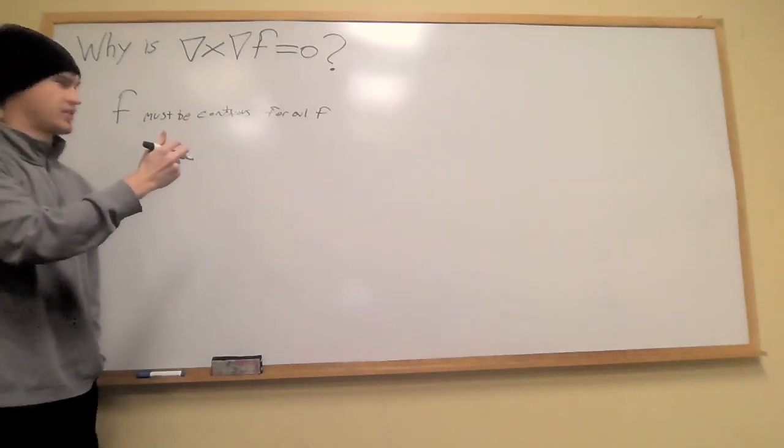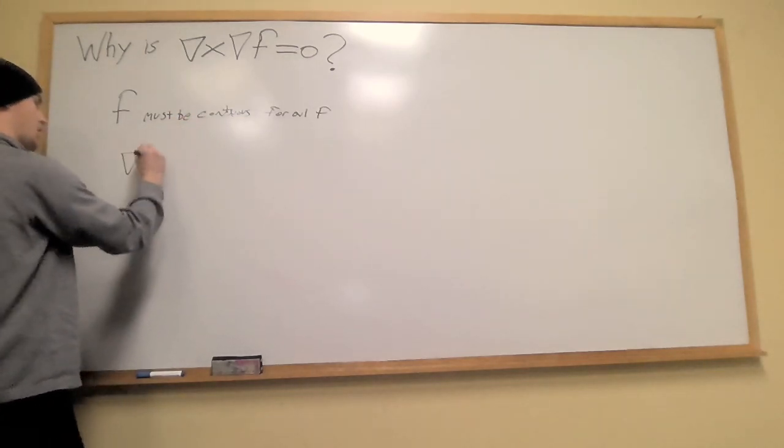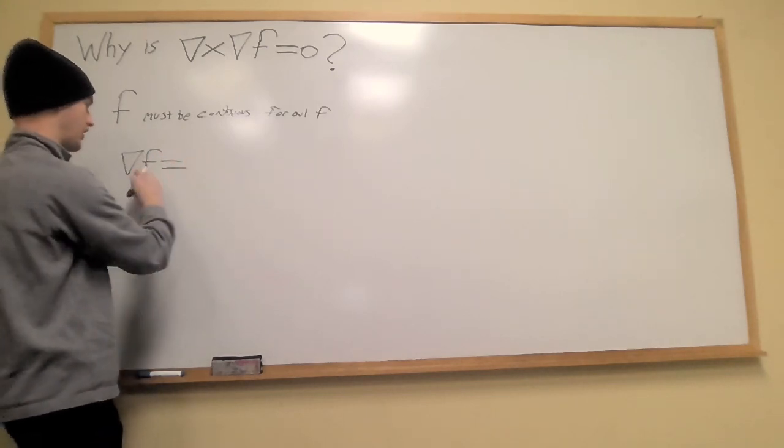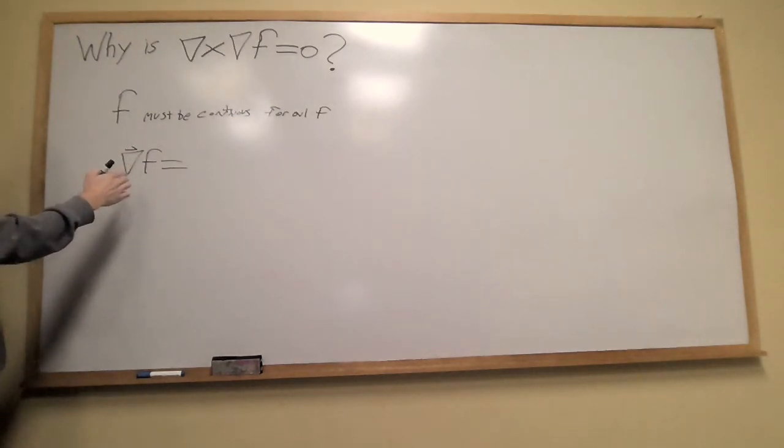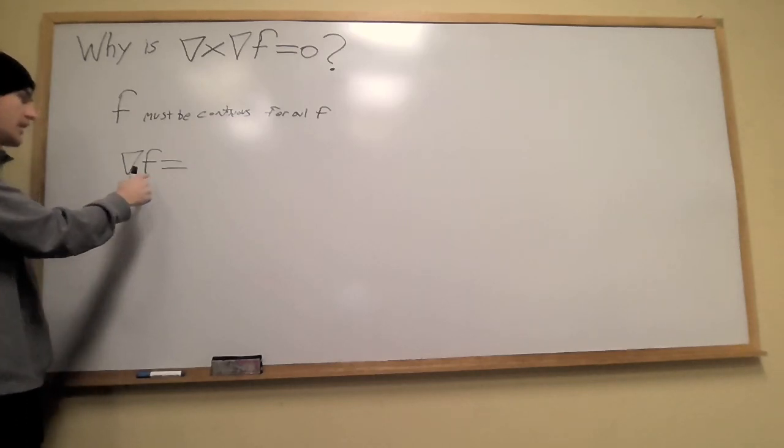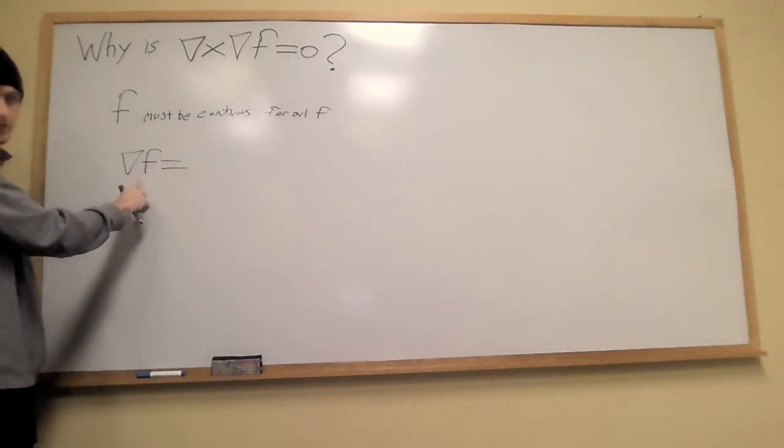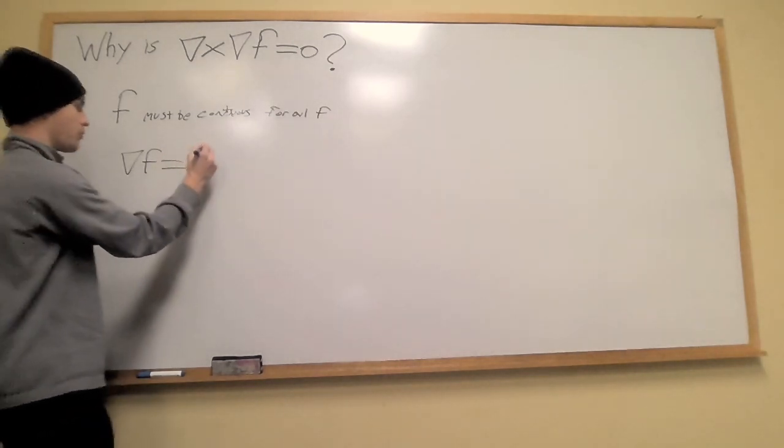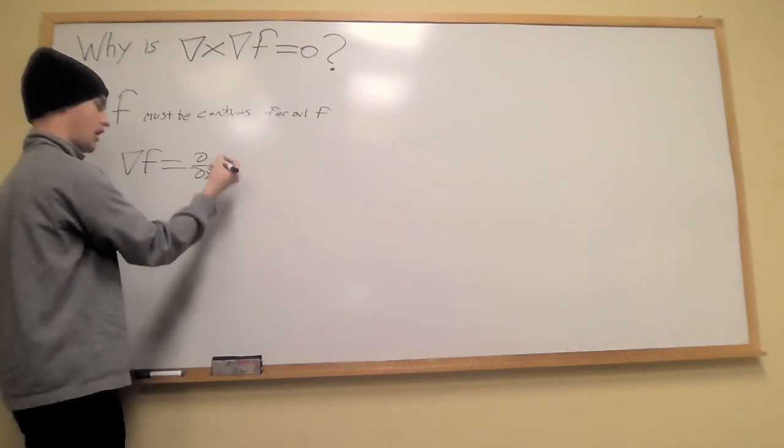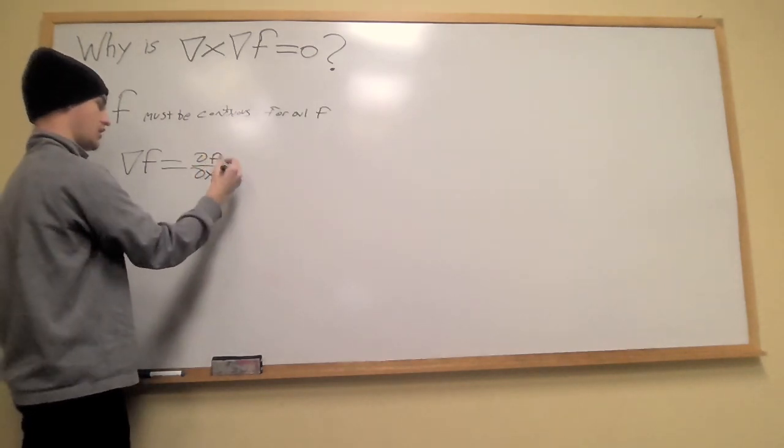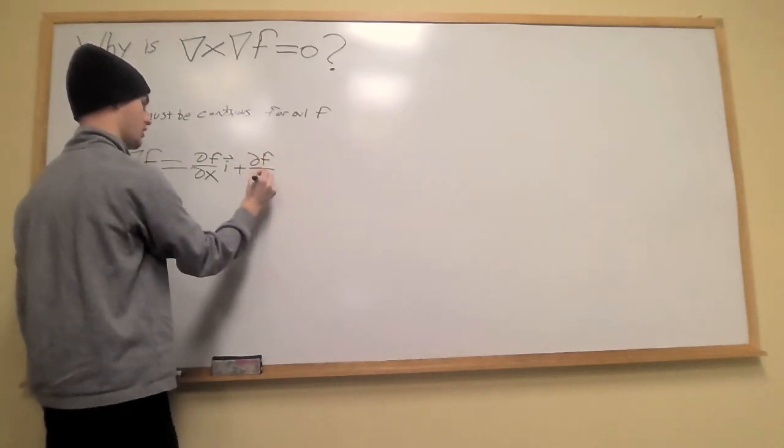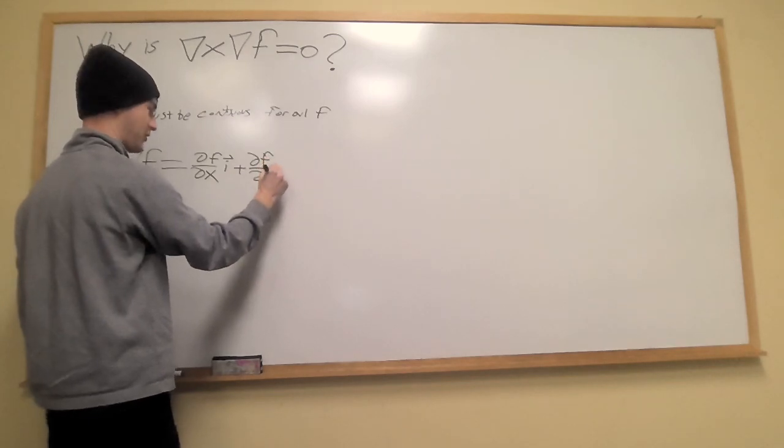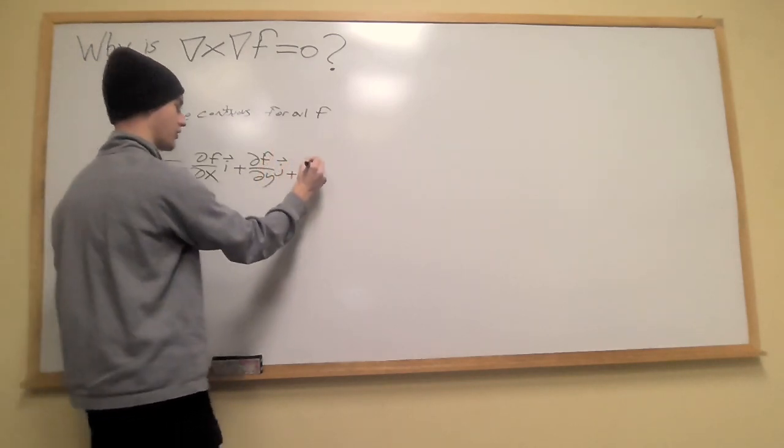So how does this work? The gradient of f—some people use a vector sign above it, it's not a true vector but the gradient operator is the spatial derivative operator that will tell you the direction of most increase on a scalar field like f. So partial f partial x i plus partial f partial y j plus partial f partial z k.